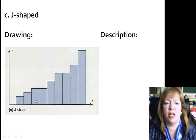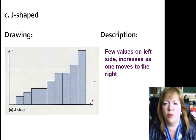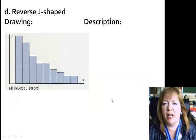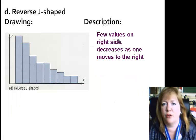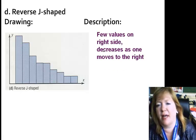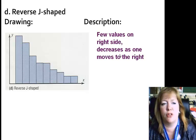Then you have the J-shaped and that definitely makes sense. This looks like a J. And so this one, it has a few values on the left and then increases as one moves to the right. That's the J-shaped drawing. The reverse J is the opposite of the J. So there's a few values on the right side and it decreases as one moves to the right.